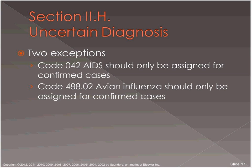There are exceptions to the uncertain diagnosis rule. Code 042 for AIDS can only be assigned for confirmed cases — even if the person has signs and symptoms of AIDS, you cannot code this unless you have a positive test documented in the chart. The same applies to avian influenza, which should only be assigned for confirmed cases with a positive test.